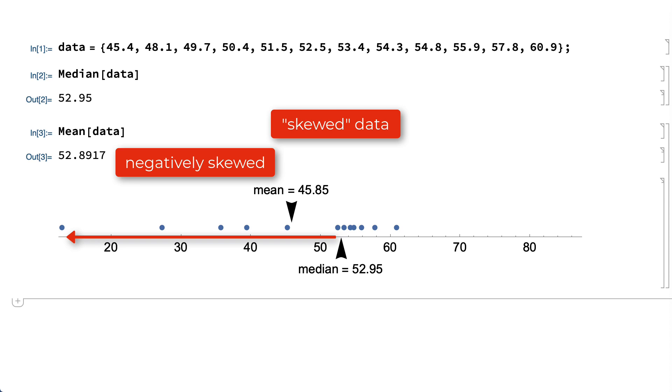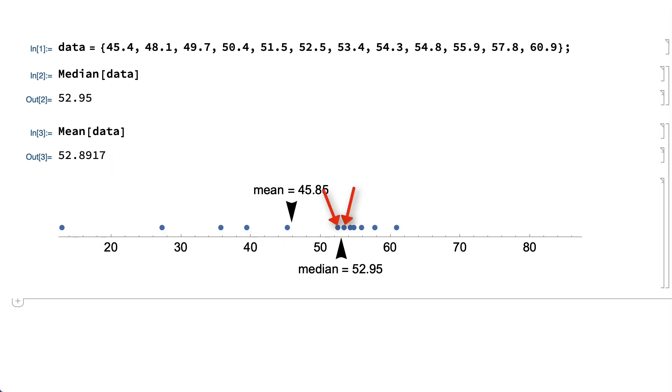In this particular example, the median is halfway between the two points in the middle of the data, and as long as those two points don't move, the median also will not move. The mean, on the other hand, averages all of the points, so if any of the points change, the mean will change as well.